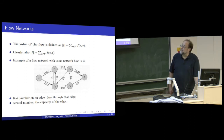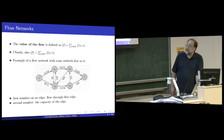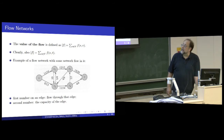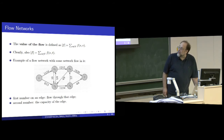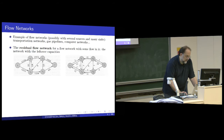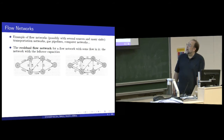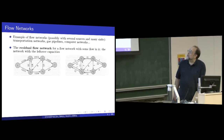The flow is modeled by a directed graph and the flow always goes in the direction of the pipe, but you can have pipes in both directions. For example, between V1 and V2 you have a pipe of capacity 4 going up and capacity 10 going down. An important concept for the algorithms that find max flow is the residual flow network.